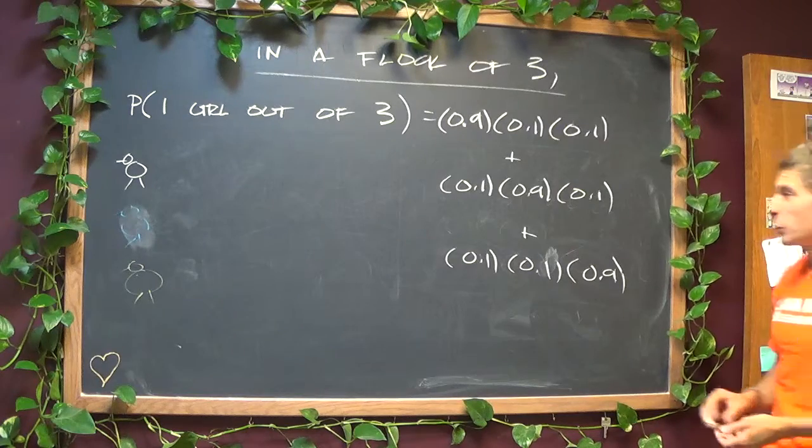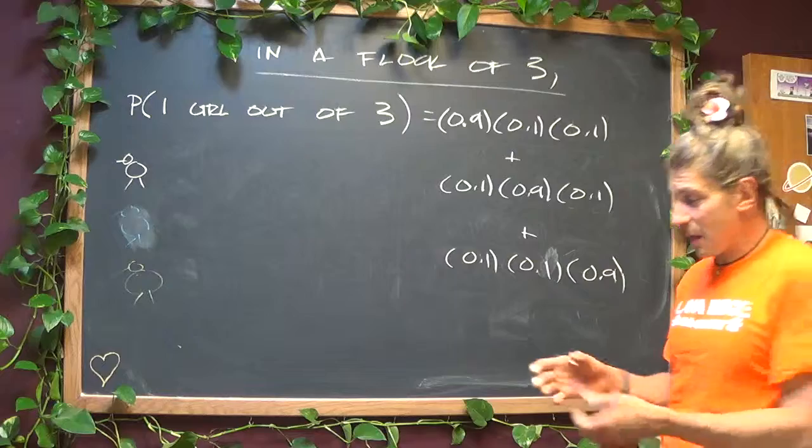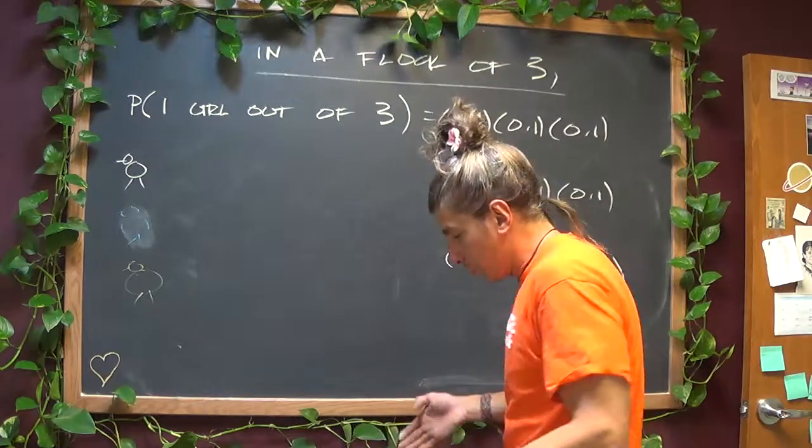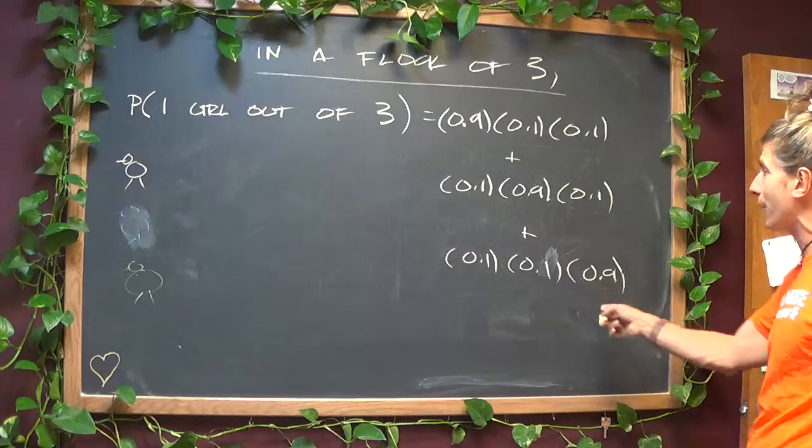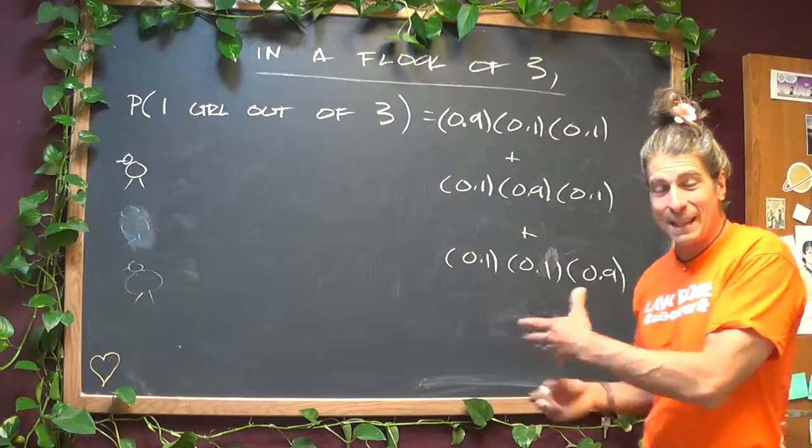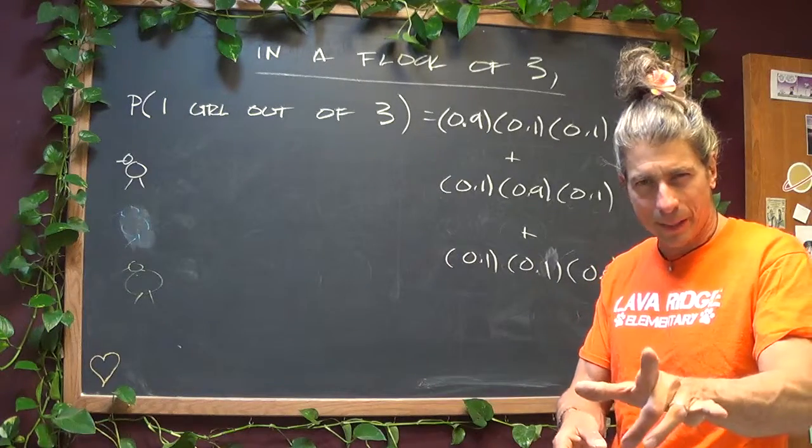And what you have to do is you have to realize, you have to account for all these because even if Max gets a boy on the first two poles, that doesn't mean he won't get a girl on the last one. He could get a girl on the last one. This is the chance of that particular order happening. But the thing about it is that particular order has multiple orders. Hopefully that makes sense.